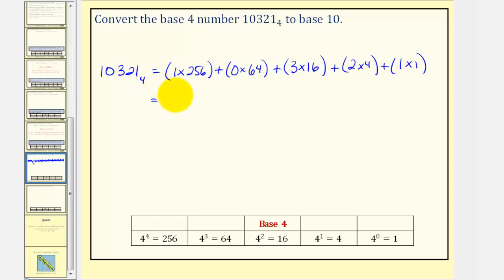And now we'll simplify to get our base 10 number. We have 256 plus zero, plus 48, plus 8, plus 1, which gives us 313, and this would be base 10. So we found that 10,321 base 4 equals 313 in base 10.